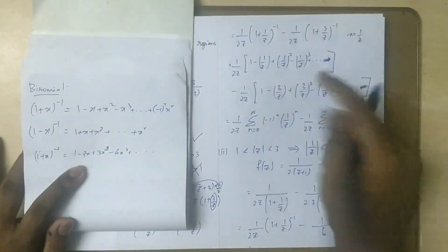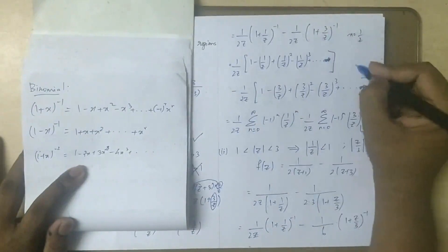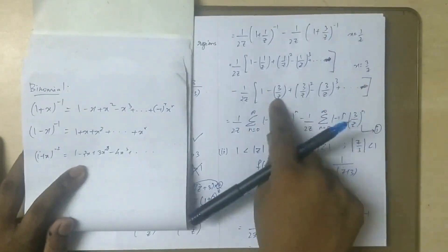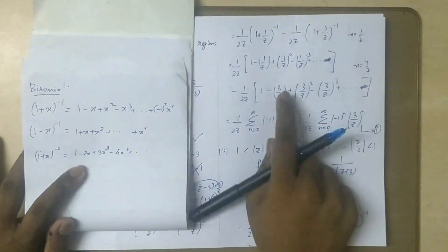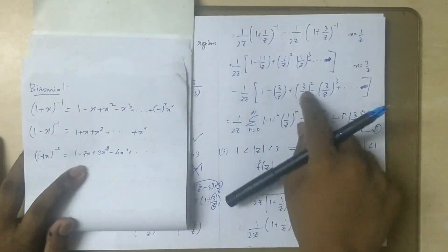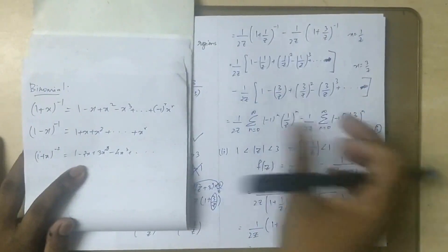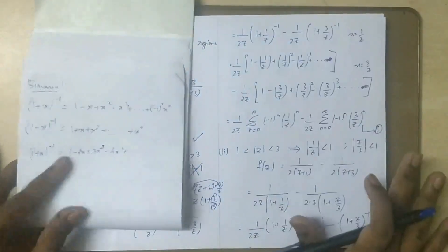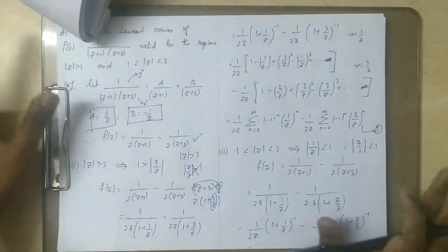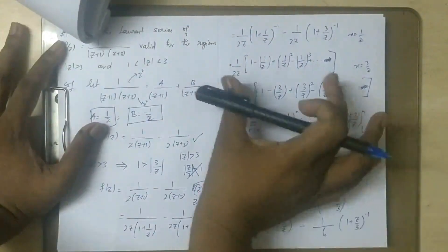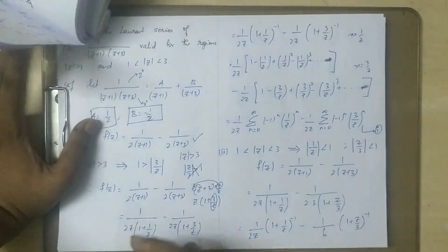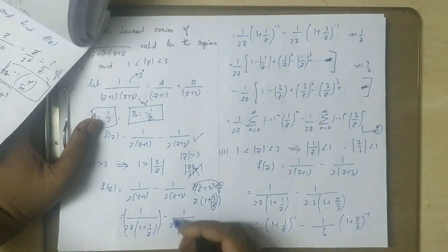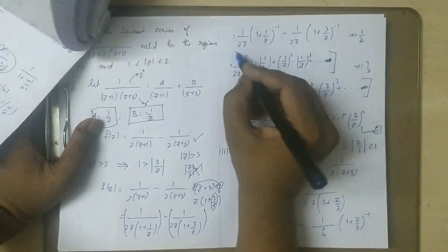Similarly, for the term 3 by z — so in this case x is 3 by z. So 1 minus x, where x is 3 by z, plus x square — so (3 by z) the whole square. Since this part is in the positive part and minus in the negative part.